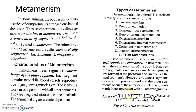The body is divided into segments — a series of compartments just like a train, like train compartments or body compartments. Each segment is called a somite, or segment, or metamere.